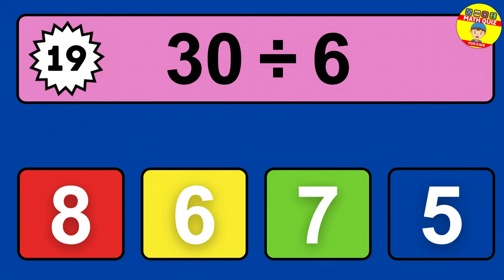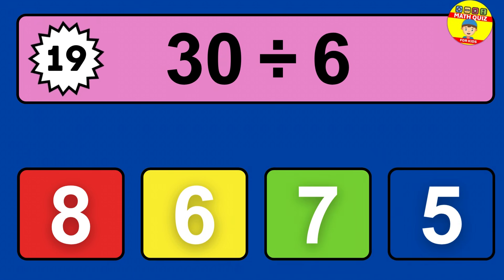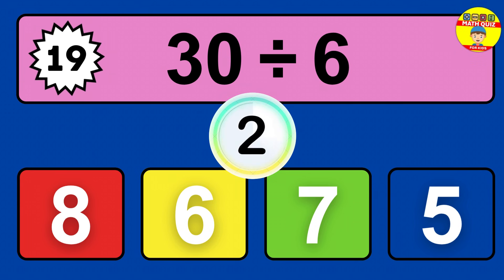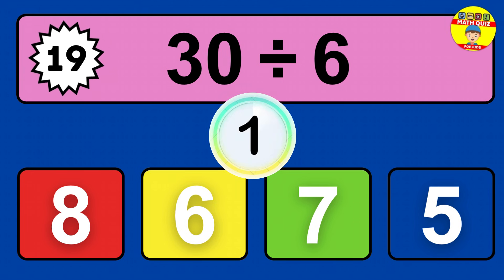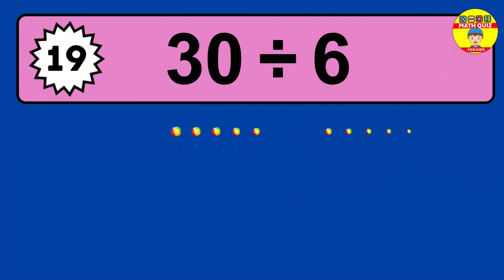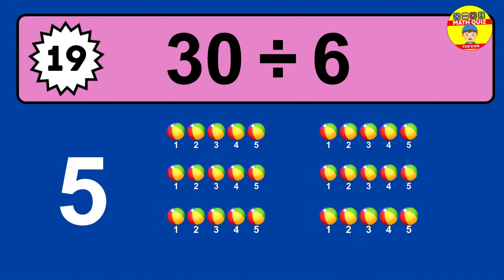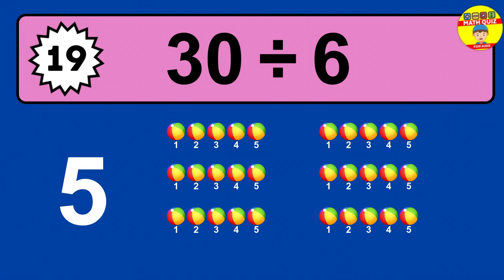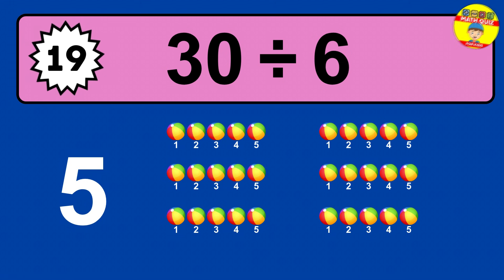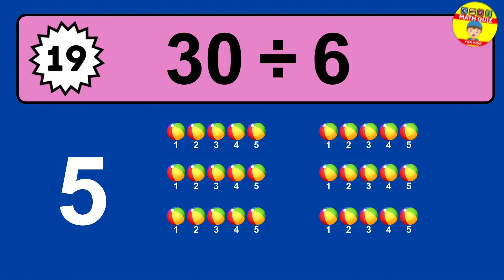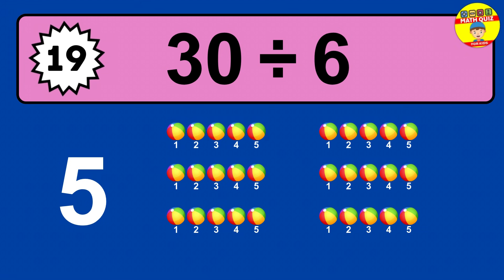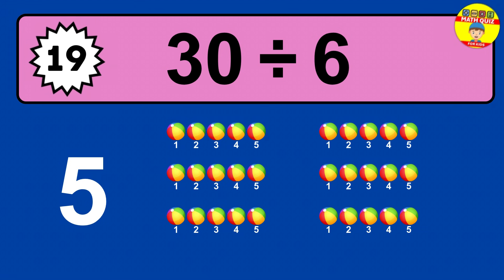30 divided by 6 — time to think. Let's go to the solution. Divide the number 30 by 6. Each group contains 6 units, so dividing 30 by 6 results in 5 equal groups. Thus, the result is 30 divided by 6 equals 5.